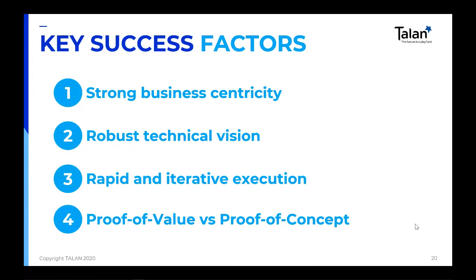Third key success factor: go rapidly, test, try, and have an iterative execution. No grandiose plan of one and a half years — try to have major elements delivered and tested every three to four months in your execution plan. Fourth: proof of value versus proof of concept. You're not just proving a technical concept — what you're looking for is how you're having an impact on the value of your company's or public institution's value chain. That concludes the wrap-up for the tech session. We can now move to questions.